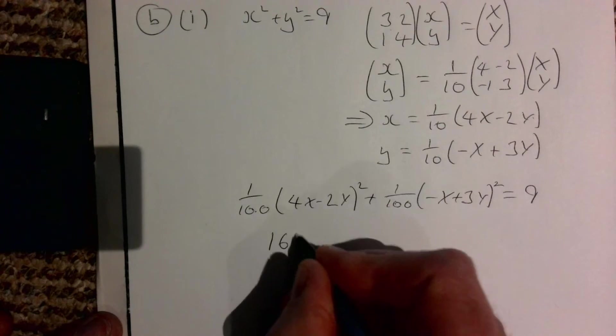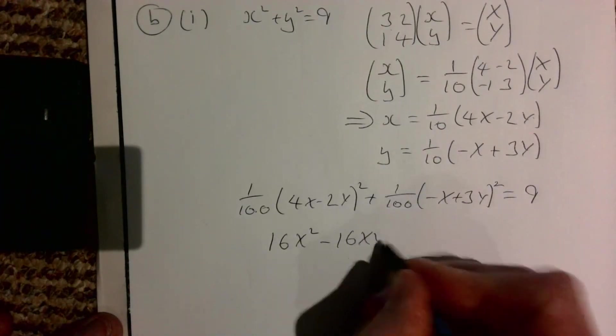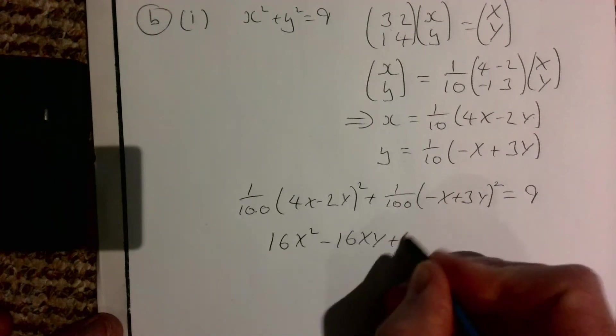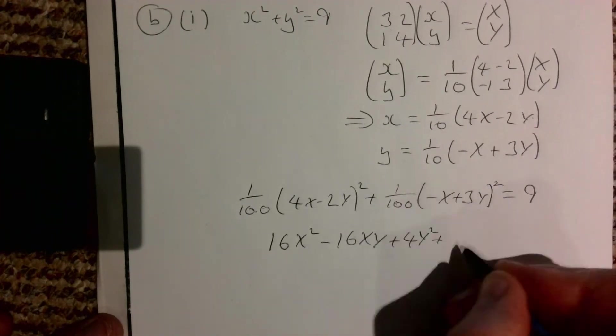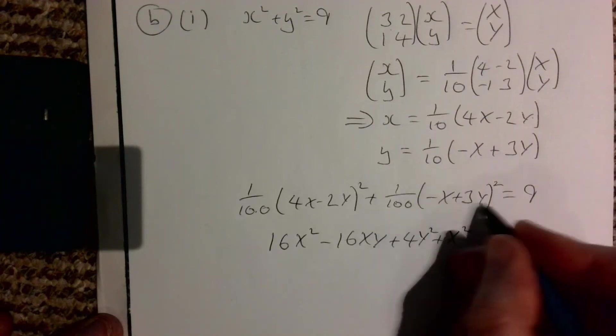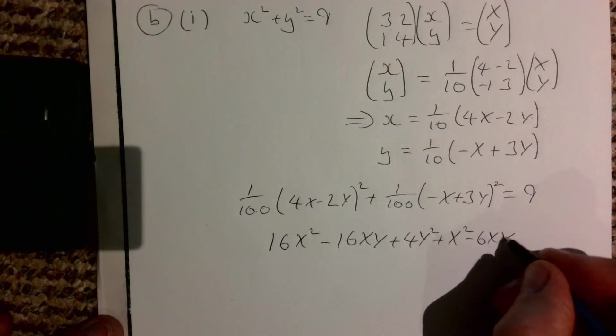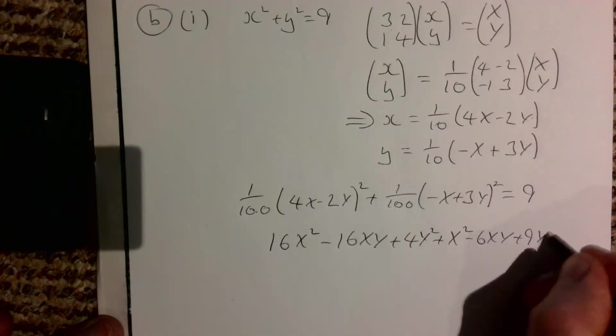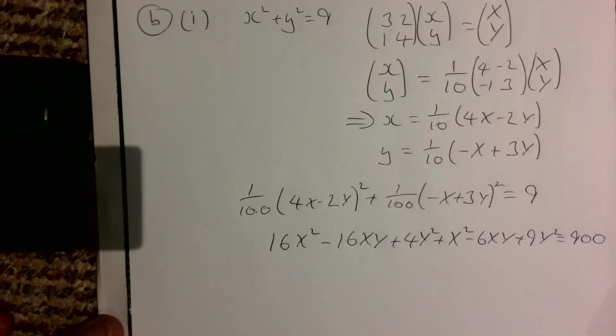So that's going to give us 16x² - 16xy + 4y² plus here x²—outer and inner—minus 6xy plus 9y² equals 900.